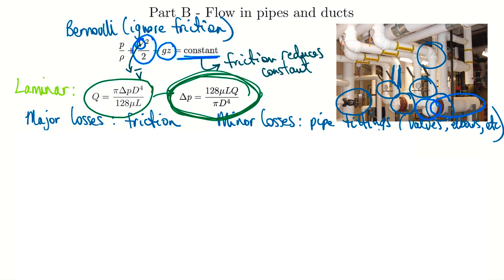That makes it easy to calculate for laminar systems, but we're going to want to know the pressure drop in turbulent systems. As we march through part B, the question we're trying to answer is: how do we figure out pressure drop for turbulent flows, knowing we can't do it analytically? We're going to have to look to experimental conditions and figure out a reliable way to compute and calculate these values.